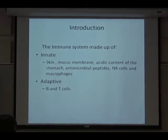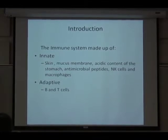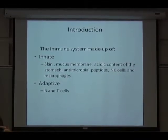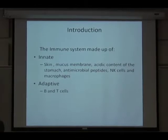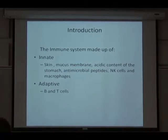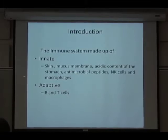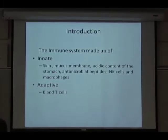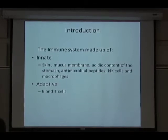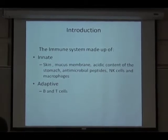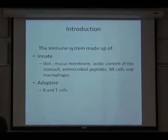Then we have cellular components, such as natural killer cells and macrophages, which also help fight against infection. Should the infection persist or the immune system fail to eliminate the pathogen, then the adaptive immune system comes into play. They work hand in hand, but the innate response takes place before the adaptive branch comes in.